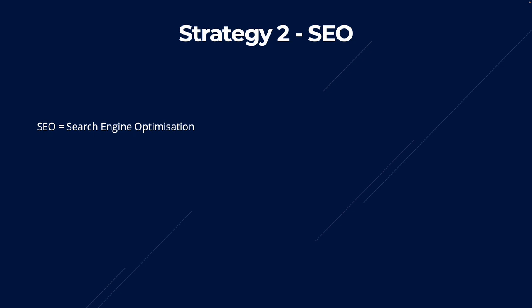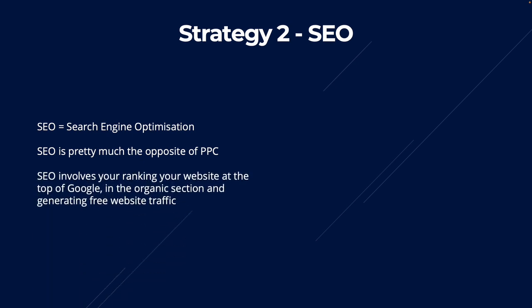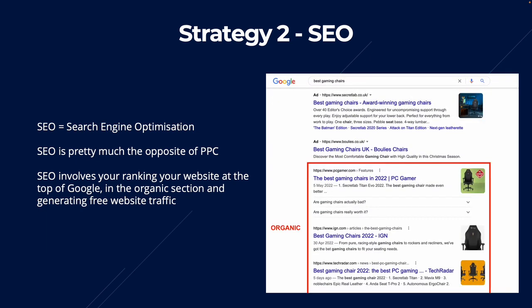Moving on to the second strategy, which is SEO. SEO stands for Search Engine Optimization and is pretty much the opposite of PPC. SEO involves ranking your website at the top of Google in the organic section and generating free website traffic. The organic section is displayed right below the ads, and anytime you appear there it doesn't cost you anything — whether that's 100 or 1,000 clicks a month. A lot of people also have more trust for websites in the organic section, as they understand those sites earned their placement rather than paying for it.